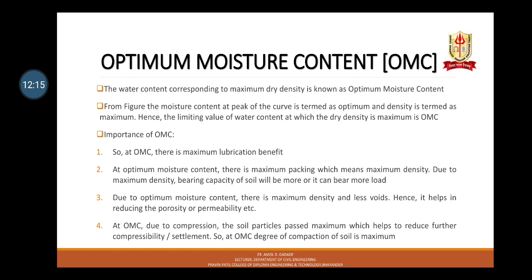The water content corresponding to maximum dry density is known as optimum moisture content (OMC). The moisture content at the peak of the curve is termed as optimum and the density as maximum. Hence, the limiting value of water content at which dry density is maximum is called OMC. Regarding the importance of OMC: when water is added to a sample, soil grains get surrounded by a film of water. The layer of water becomes thicker and thicker. This film helps in sliding of particles when compaction effort is applied, helping in close packing. A stage is reached when there is maximum packing — this stage is called optimum moisture content.